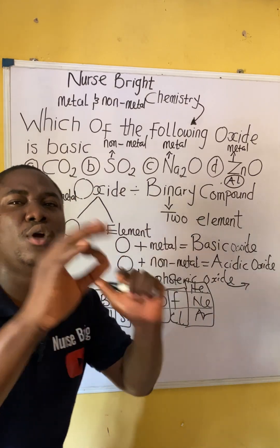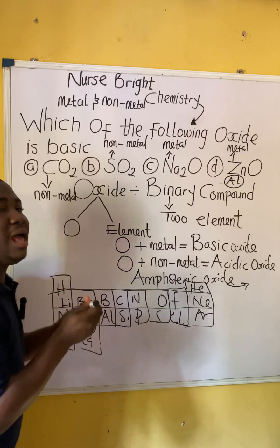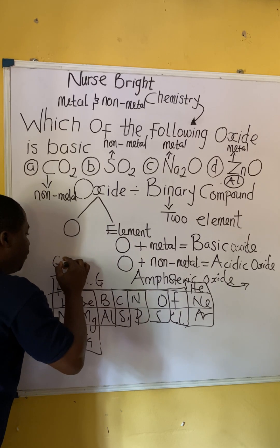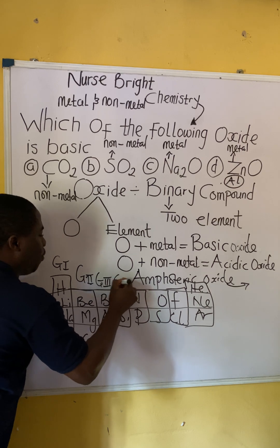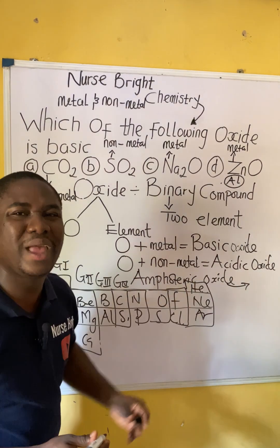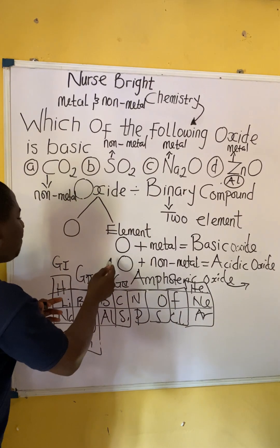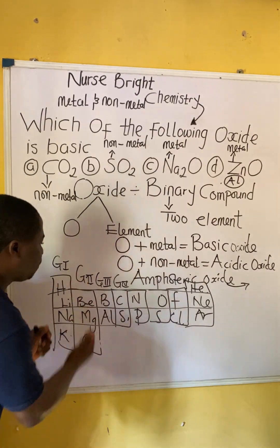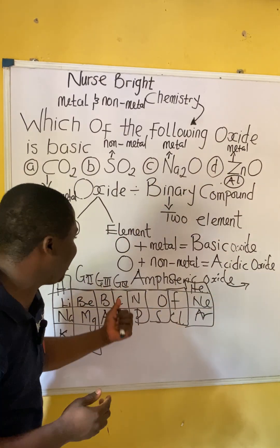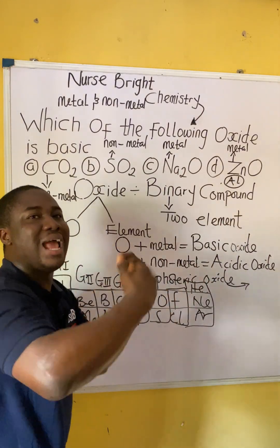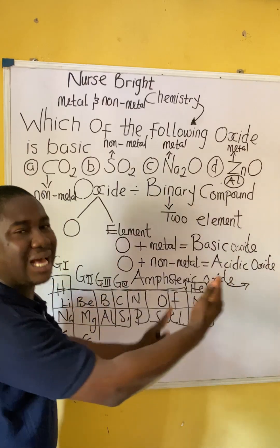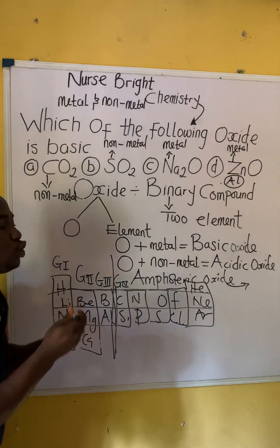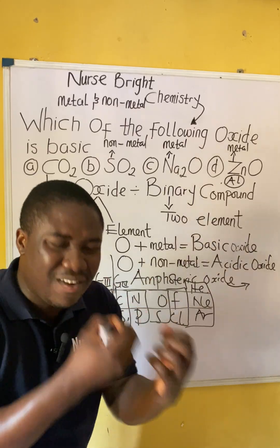This is the periodic table of the first 20 elements — hydrogen, helium, and so on. Elements have group numbers: the vertical columns are the groups. Group 1, group 2, group 3, group 4, and so on down to group 0 or group 8. Elements from group 1 to group 3 are metals — group 1 elements are called alkali metals, group 2 elements are called alkaline earth metals, group 3 elements are called earth metals. From group 4 down, they are majorly non-metals. In chemistry, we have more non-metals than metals. So sodium, being in group 1, is a metal.